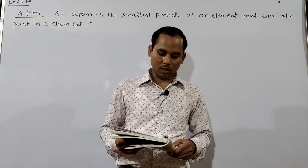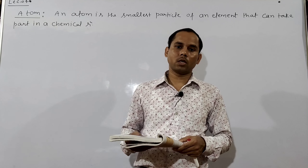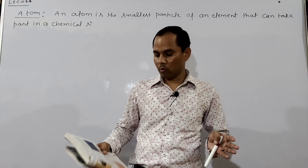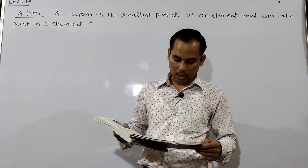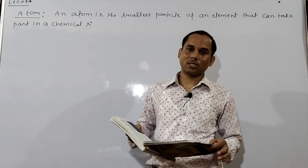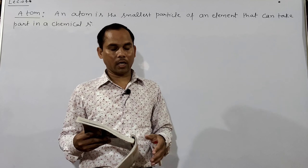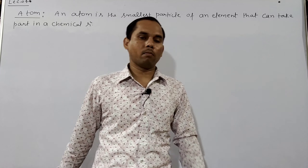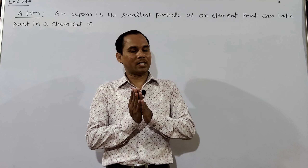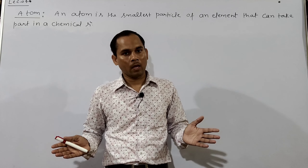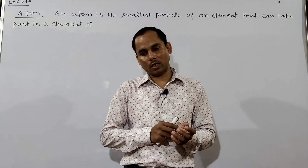Question number three: which postulate of Dalton's atomic theory can explain the law of definite proportion? If you refer to the previous third lecture on Dalton's atomic theory, you will see that the sixth postulate states: the relative number and kinds of atoms are constant in a given compound. So postulate number six explains the law of definite proportion.